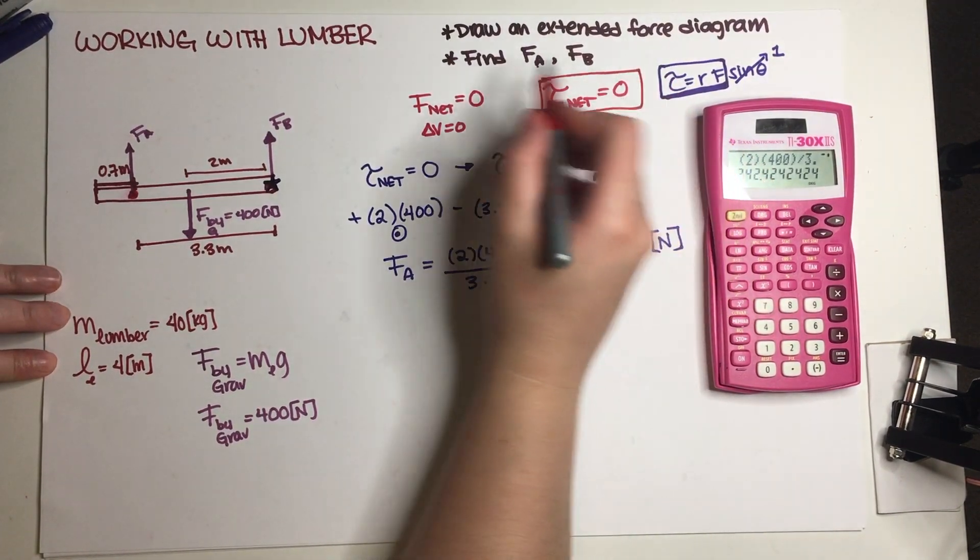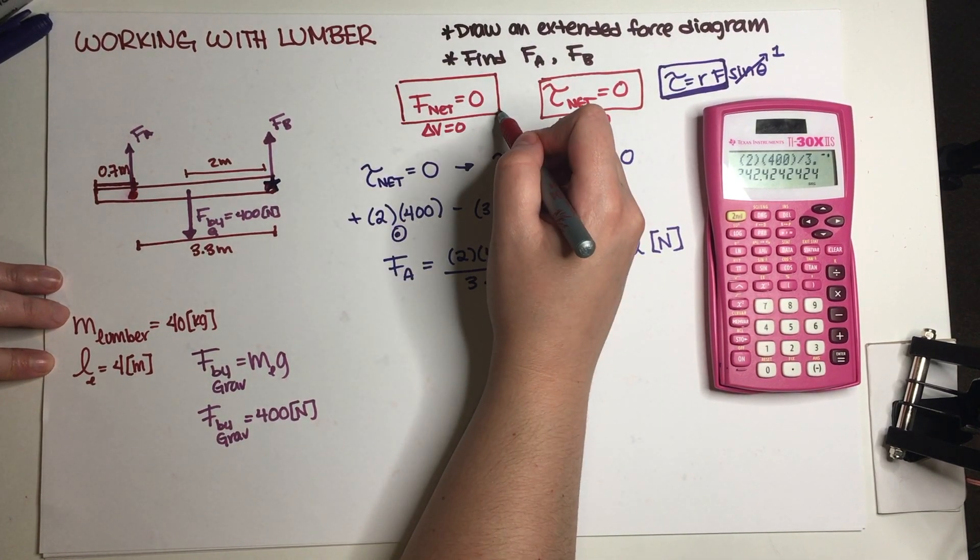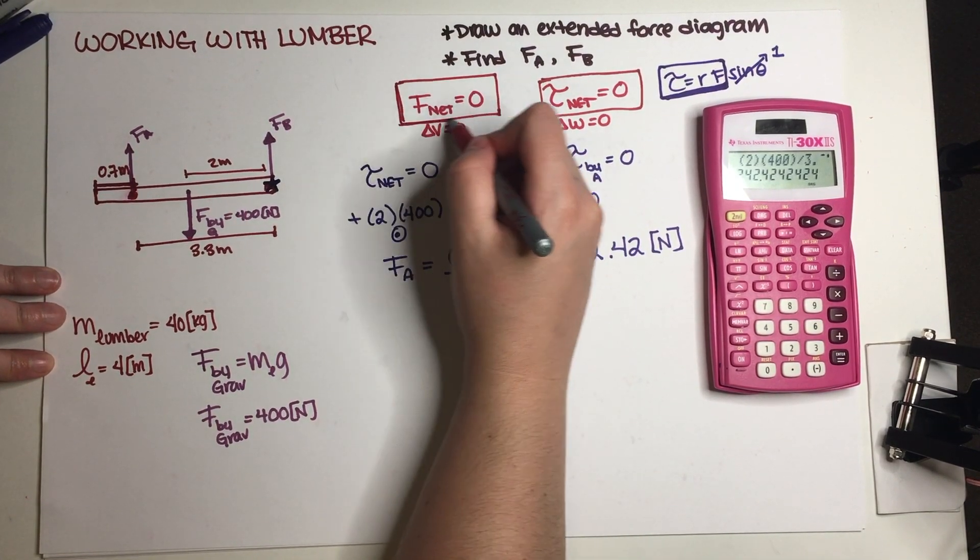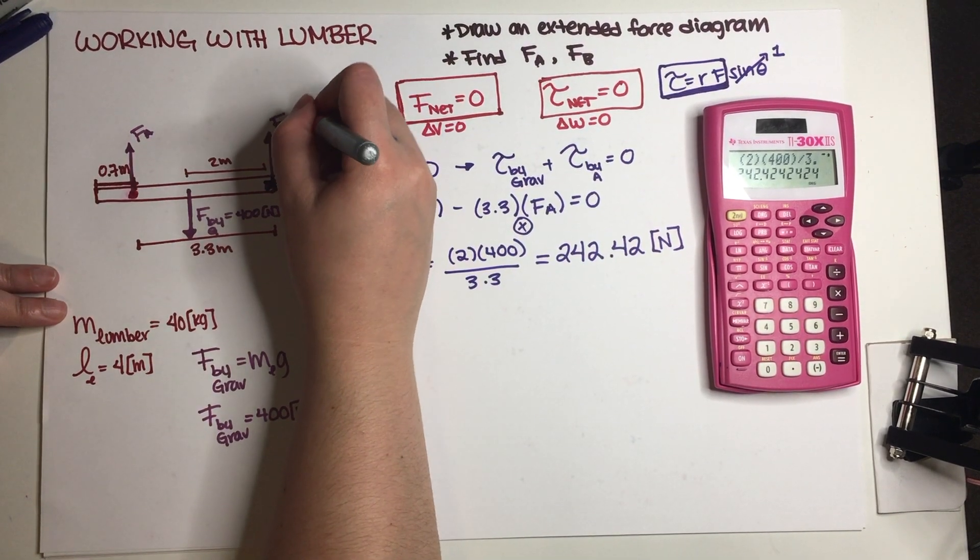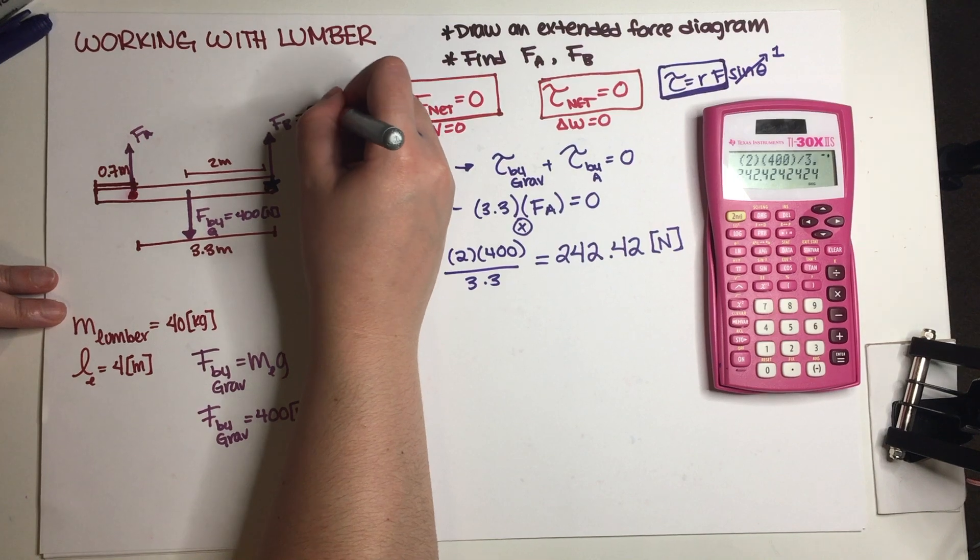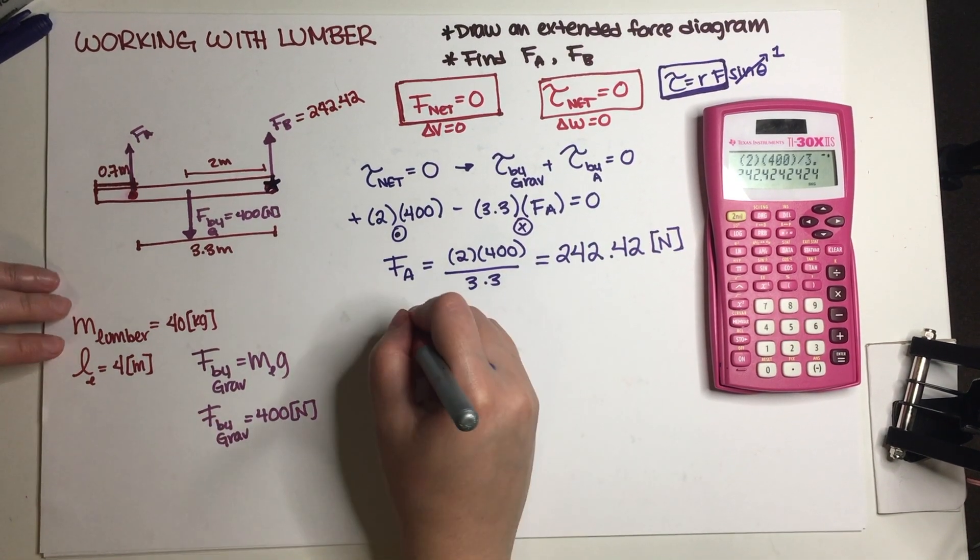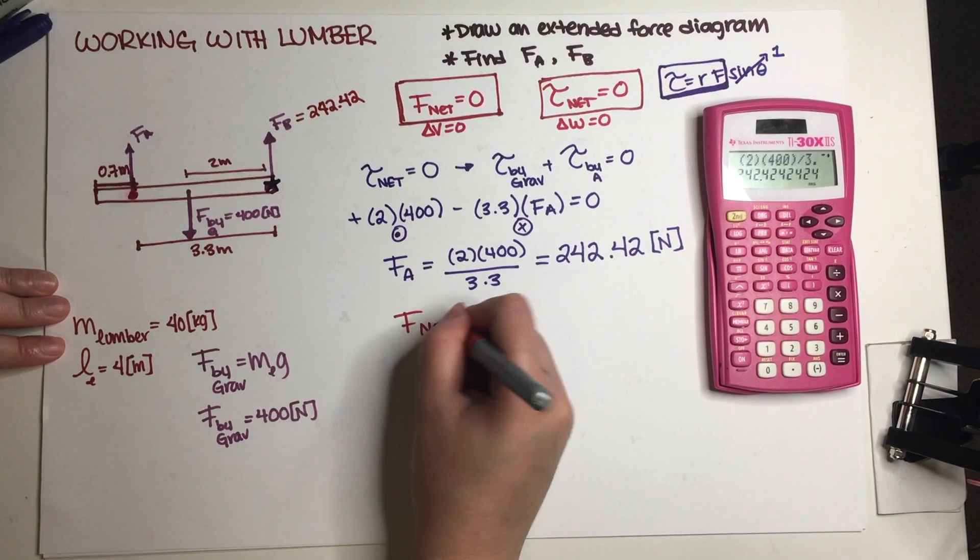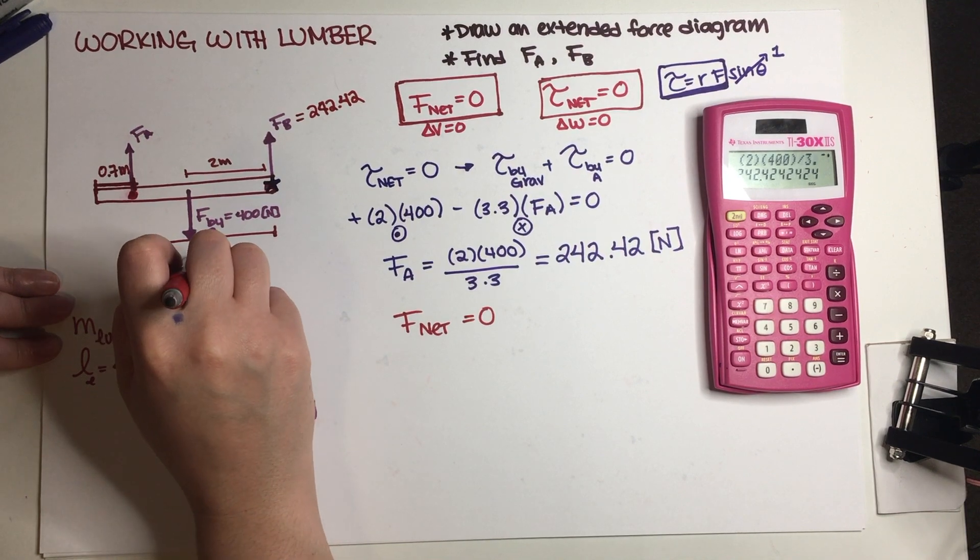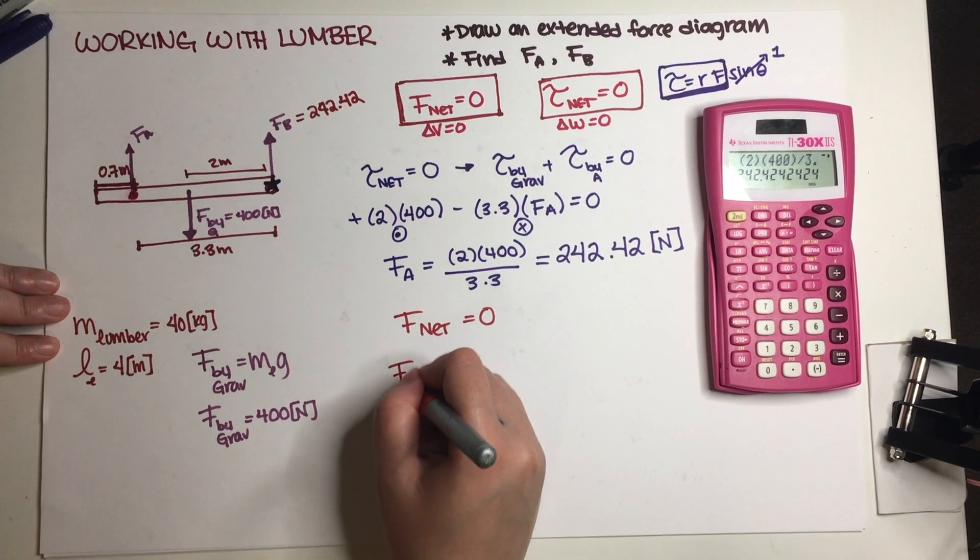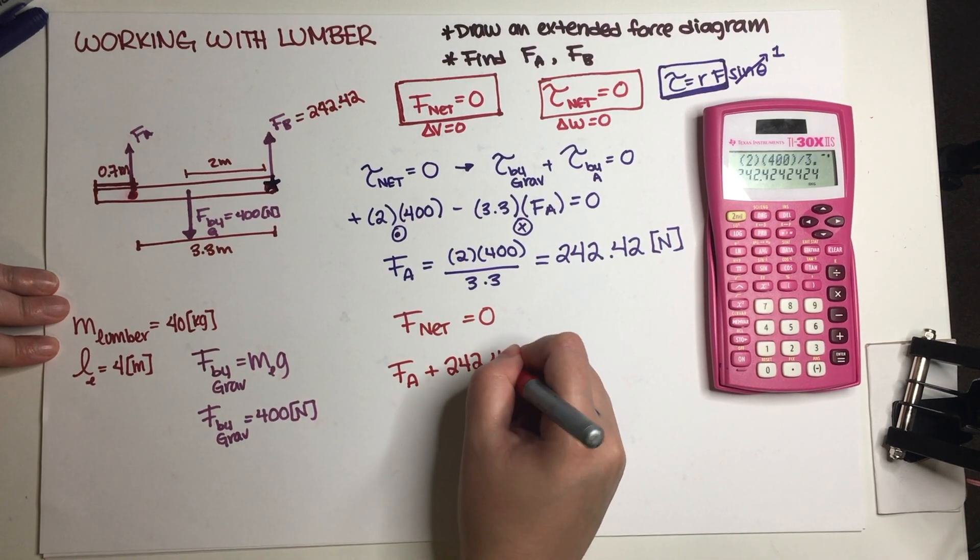But what I'm proposing is let's remember that we have another equation which is that all of the forces need to add up to zero. So we have three forces out of which we know what two of them are, this is 242.42. So let's just balance our forces. Our net force needs to be equal to zero.